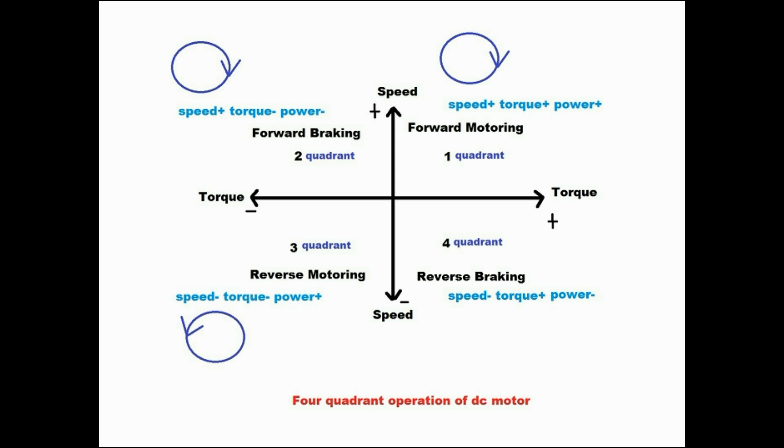Fourth is reverse braking in fourth quadrant. The speed and power are negative and torque is positive. It is also called regenerative braking.